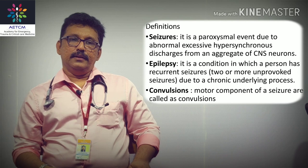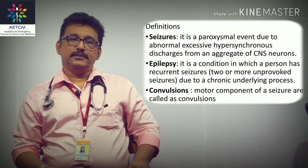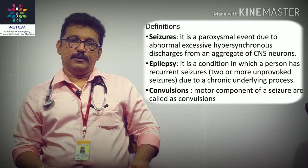Epilepsy is a condition where the patient has recurrent seizures. Convulsion is the motor component of a seizure. To summarize: a seizure is hypersynchronized electrical activity from the brain, epilepsy is repeated seizures, and convulsions are the motor activities that occur during a seizure.